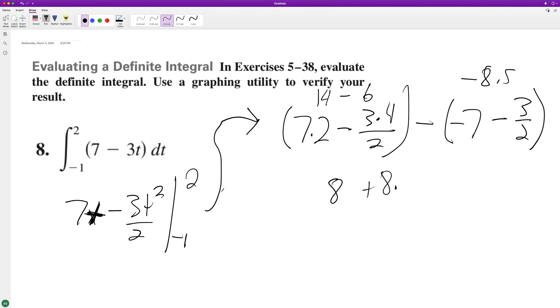So we end up with 16.5, or 33 over 2. And that's it.